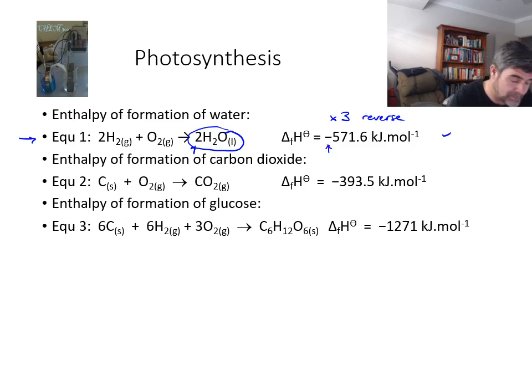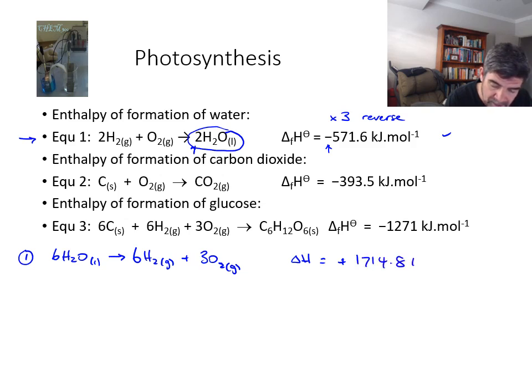So the first thing we need to do is rewrite this particular equation. This is the change to equation one: 6H2O liquid going to 6H2 gas and 3O2 gas, with a delta H value over here which is now going to be equal to plus, because the sign has changed, 1714.8 kilojoules.